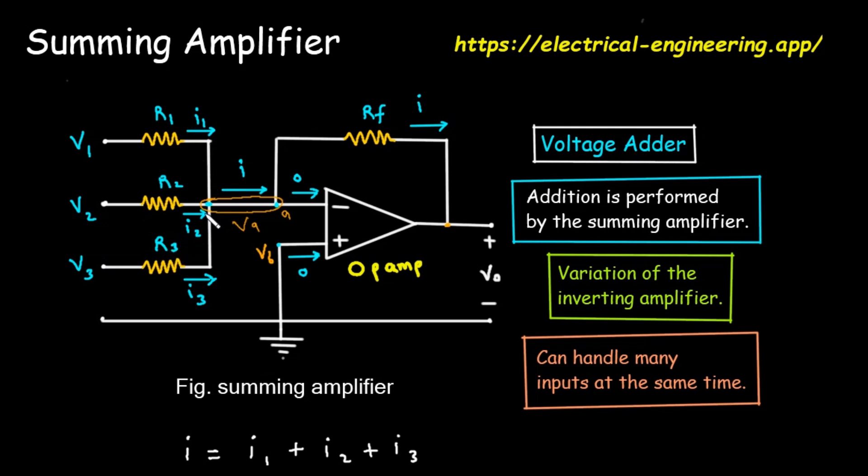The small arrows labeled I1, I2, and I3 represent the flow of electric current from each voltage source, through its resistor, heading towards the op-amp.